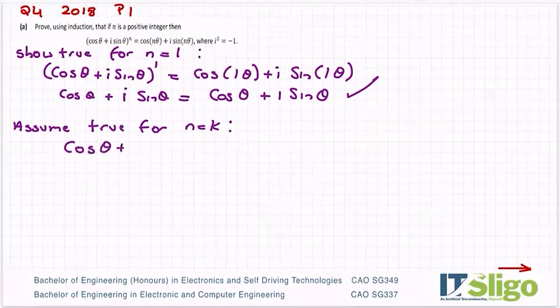So what are we going to assume that's true? That if we have cos theta plus i sine theta to the power of k, that that will be equal to cos k theta plus i sine k theta. That is what we are assuming true.